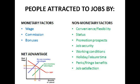Now let's look at the supply of labour to a particular occupation. People are attracted to jobs by both monetary and non-monetary factors. Monetary factors are any financial rewards for an occupation — wage, commission, bonuses, anything to do with money — and people generally want a job with a higher wage rate. Non-monetary factors are any non-financial rewards for a particular occupation: convenience, status, promotion prospects, job security, working conditions, holiday or leisure time, perks, fringe benefits, and job satisfaction. Job satisfaction tends to be linked to medicine and teaching — anywhere where you feel your work is valued.